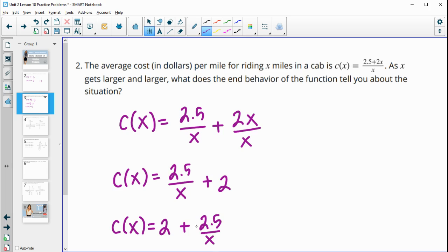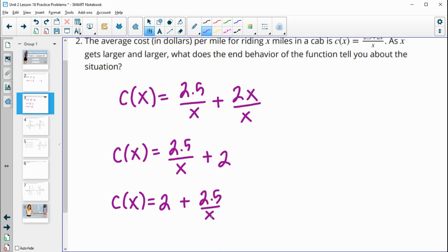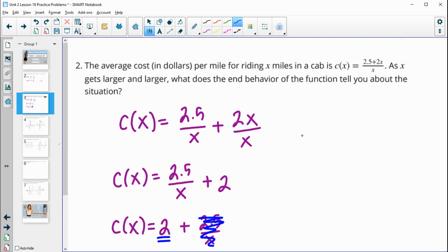So as our x's get larger and larger, then this will be 2.5 divided by a really big number. So this is 2.5 divided by a million, this is basically non-existent. This is so small. So as our x's get really, really big, this basically goes away. So our function approaches 2. So the end behavior here approaches 2. So as x gets really large, f(x) approaches 2.